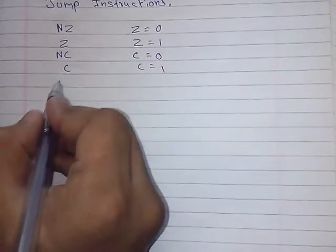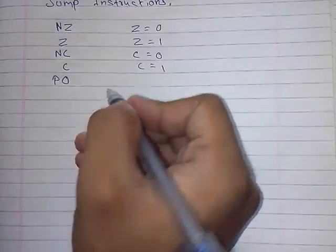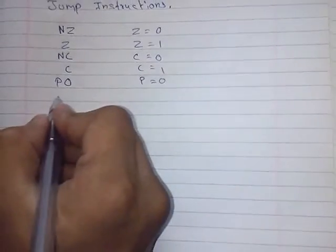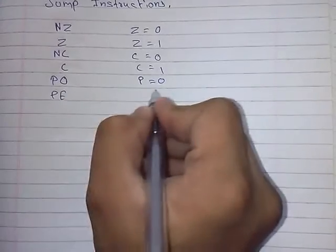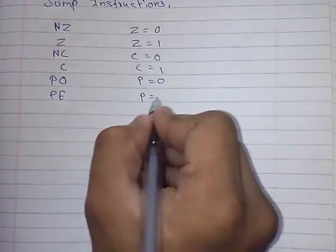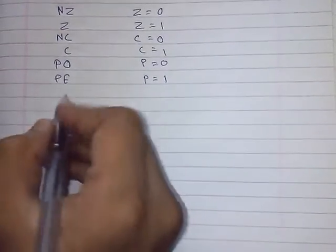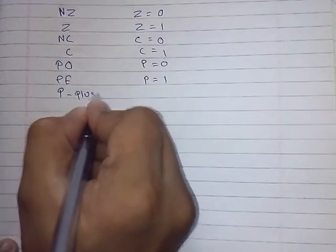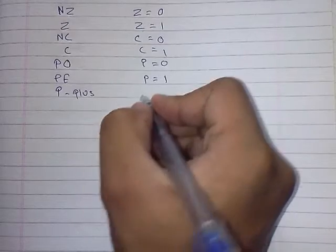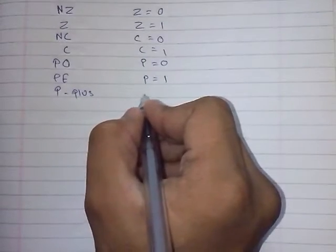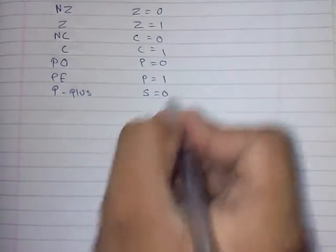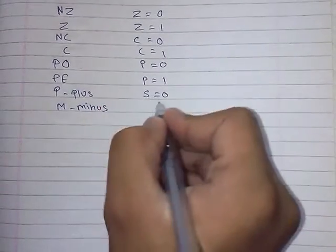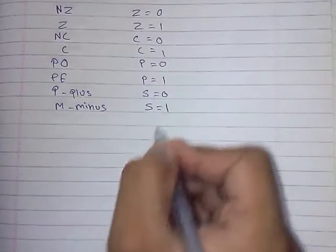Next is parity odd, which means if the parity flag is odd. Or parity even, where parity equals one. Or P, which means plus, noted by the sign flag where the sign flag is reset. Or minus, where the sign flag is set.